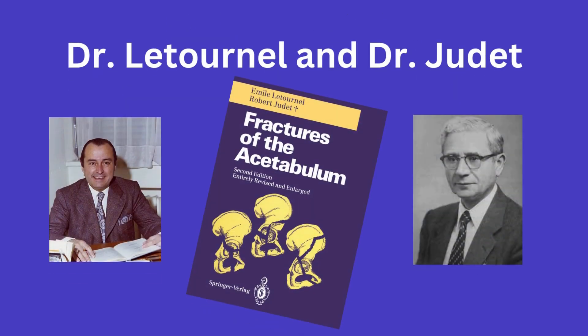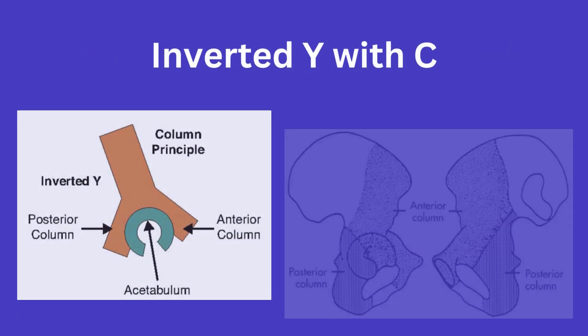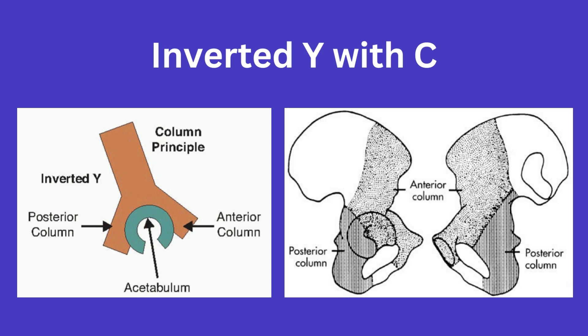To start, we must first understand where the idea of columns originates. Dr. Letournel and Dr. Judet, in their 1993 book titled Fracture of the Acetabulum, described the hemipelvis as an inverted Y with a C shape that represented the articular surface of the acetabulum in between the limbs of the Y, as you can see here. He talked about how the transmission of one's weight was transferred between the lower extremities and the spine through the anterior and posterior limbs of the Y. These are known as the anterior and posterior columns.